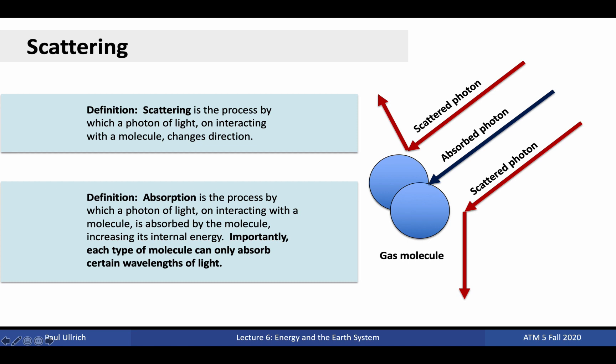However, light does not interact with all molecules in the same way. Molecules are picky when it comes to the type of light that they absorb. They can only absorb certain wavelengths, while other wavelengths get scattered or pass by the molecule harmlessly.